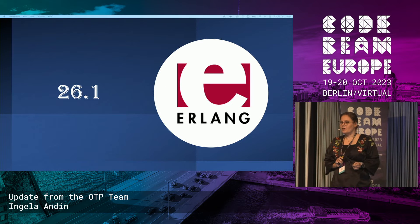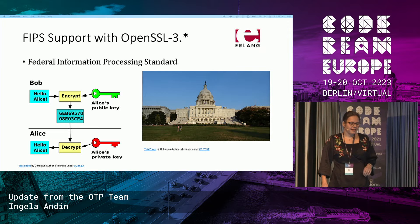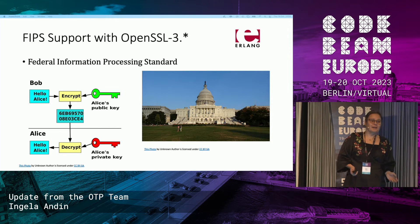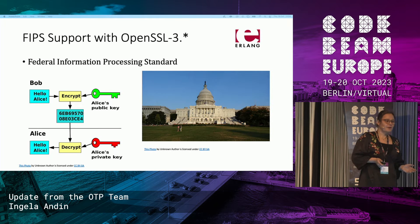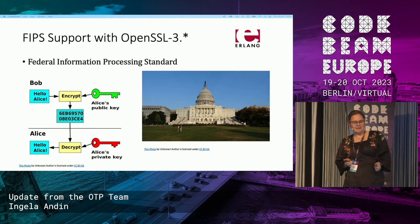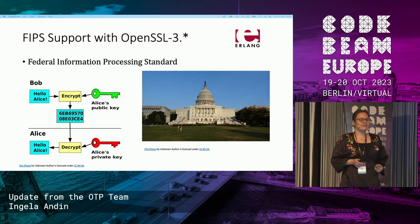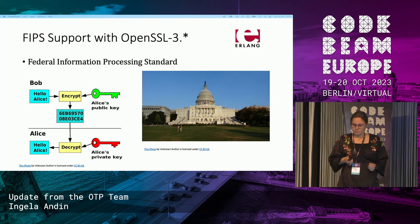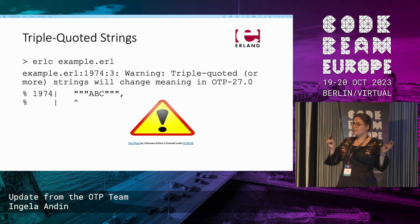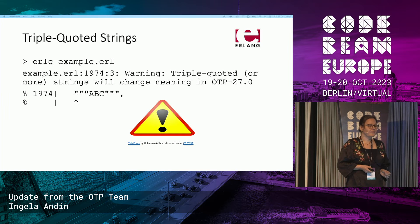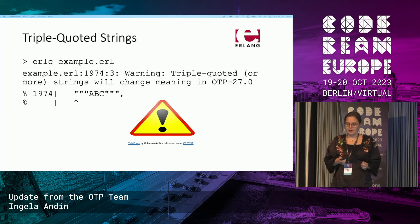Moving on to OTP 26.1: for those of you who need to run your applications in US governmental environments, you will be very happy to know that we now support FIPS for our crypto application with OpenSSL FIPS-enabled versions. If you have happened to use triple quotes somewhere in your codebase, you will now get a warning about this — I'll tell you a little more why in a minute.